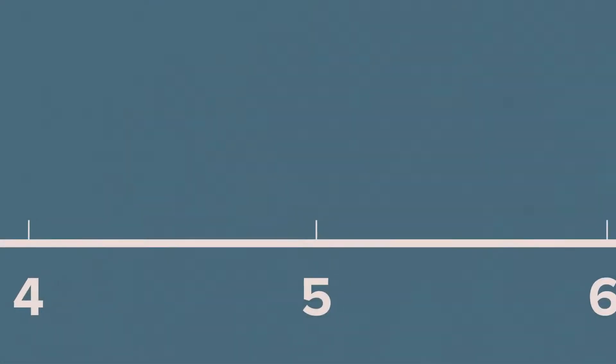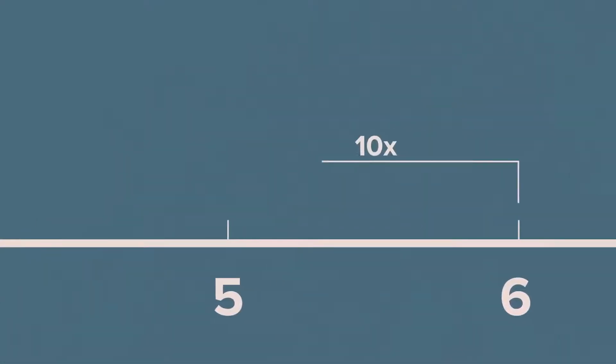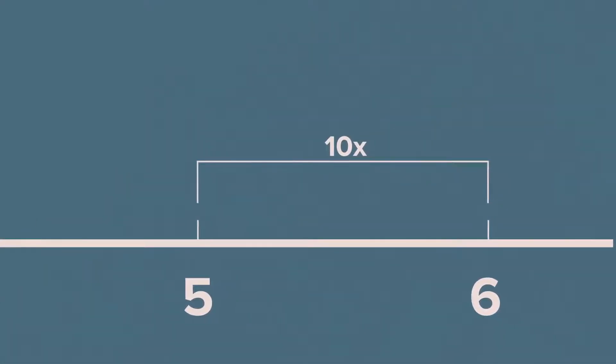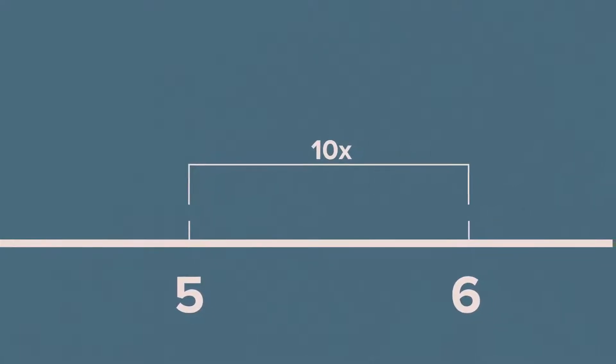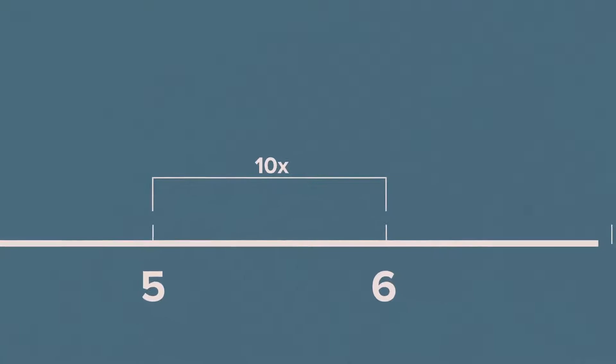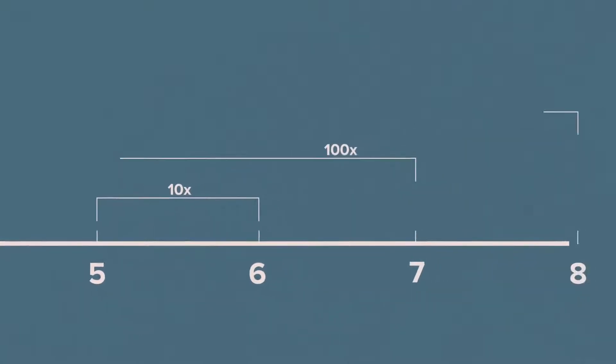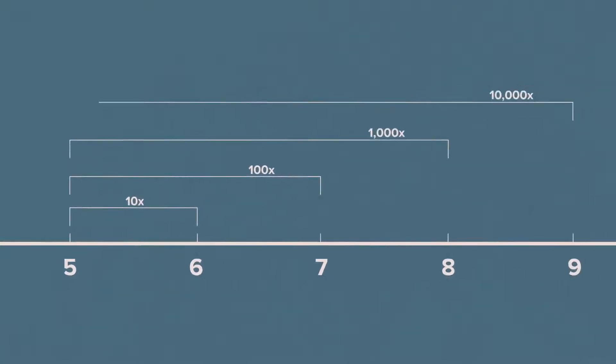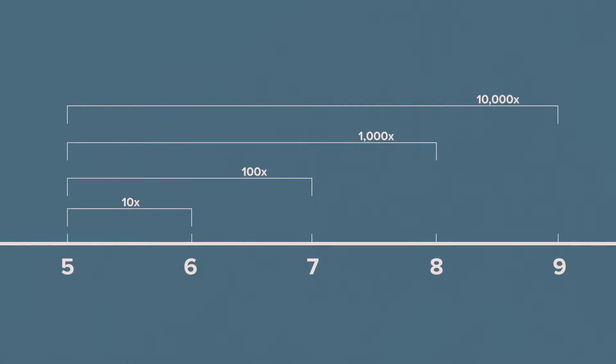What we consider neutral pH is 7.0. If it's over 7.0, we consider it alkaline. If it's under 7.0, we consider it acidic. Every point of pH we move is 10 times more acidic than the point before. A pH of 5 is 10 times more acidic than a pH of 6, so it is 100 times more acidic than a pH of 7.